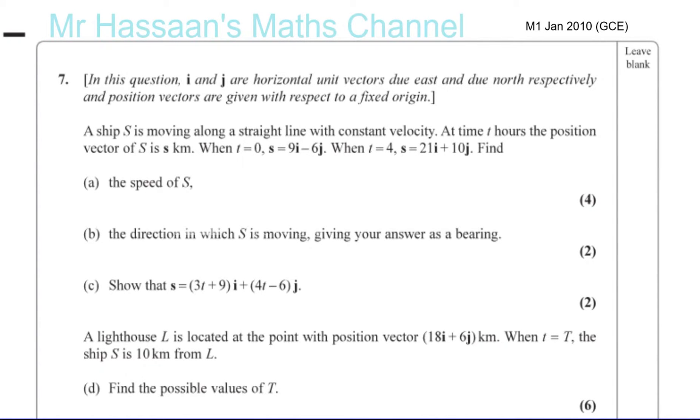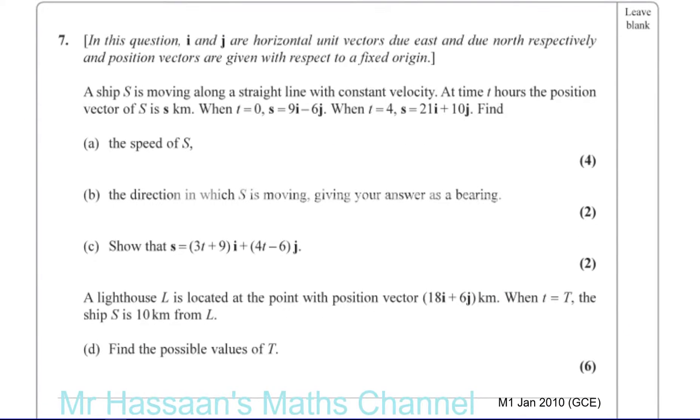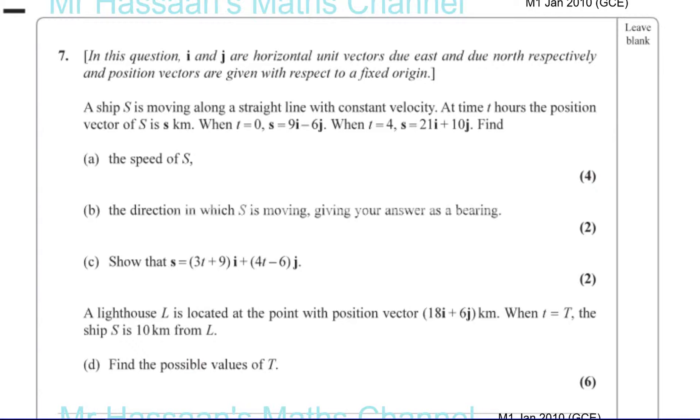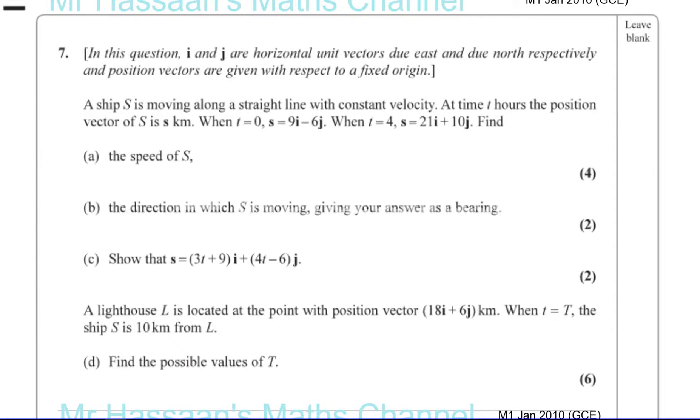Okay, now for question number seven from M1 Mechanics 1 paper from January 2010, the GCE paper. This is a question on vectors. I and J are horizontal unit vectors due east and due north respectively, so I is due east and J is due north as we normally have it - unit vectors of length one unit.